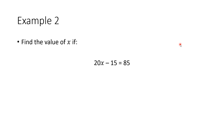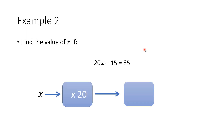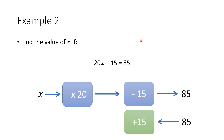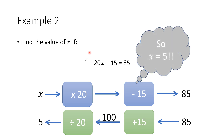Another example: find the value of x if 20x minus 15 is equal to 85. You start with x, multiply by 20, subtract 15, and get an output of 85 — that's the equation written as a function machine. Working backwards: start with 85, opposite of take away is add, so adding 15 gives 100. Then opposite of times by 20 is divide by 20, giving a value of 5. So x equals 5.